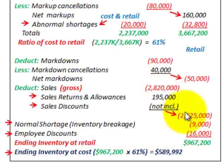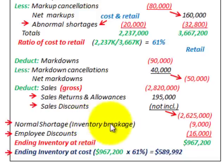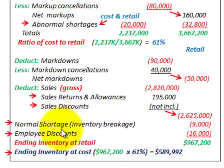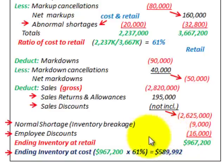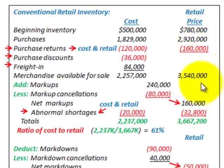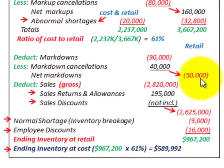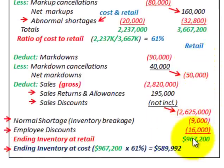Our net sales after returns and allowances come to $2,625,000. We also have a normal shortage — inventory breakage of $9,000 — which doesn't affect cost but reduces the retail price column. Similarly, employee discounts of $16,000 don't affect cost; they are only a reduction from the retail price column.